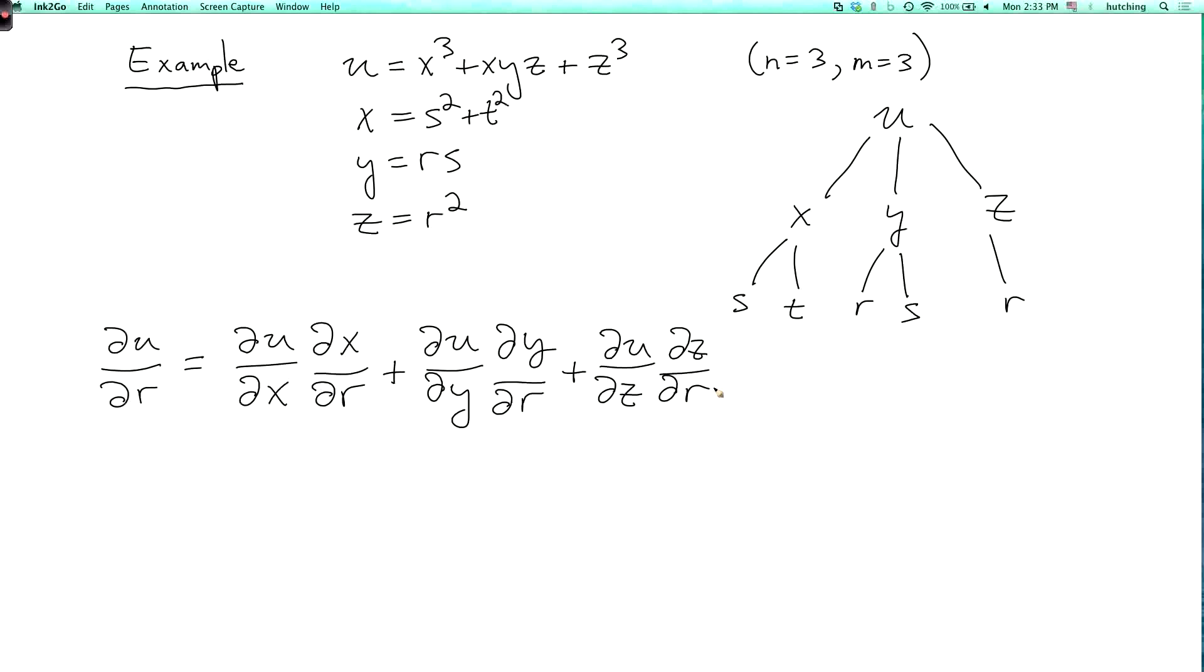Now in this particular case, the variable x doesn't actually depend on r. So we could forget about this first term because partial x partial r is going to be zero. Anyway, if we just follow the general chain rule, we write this down.